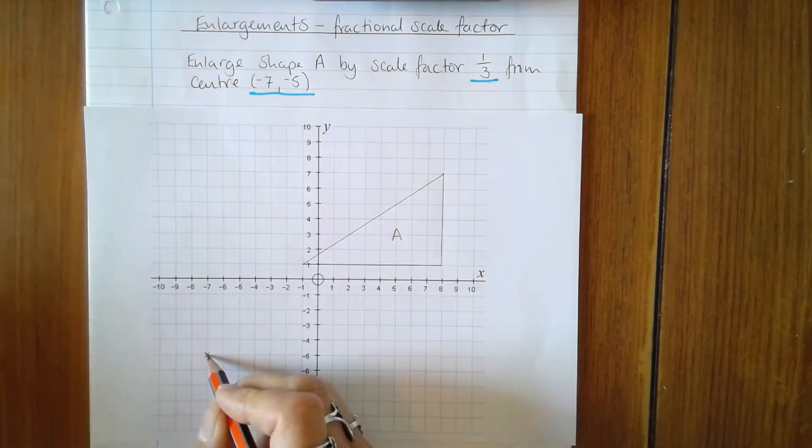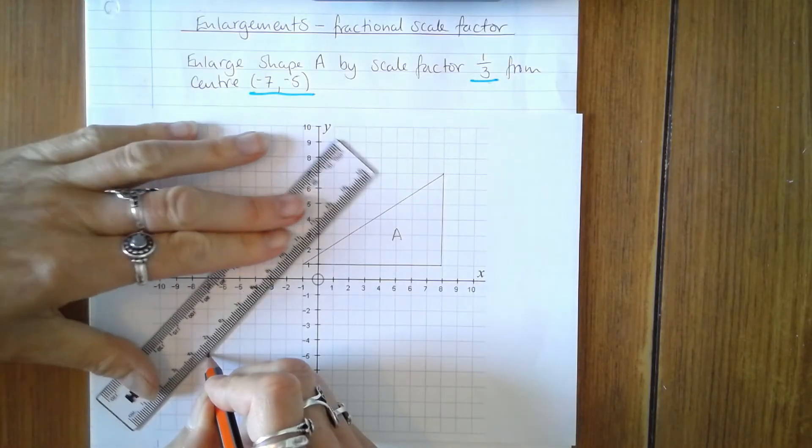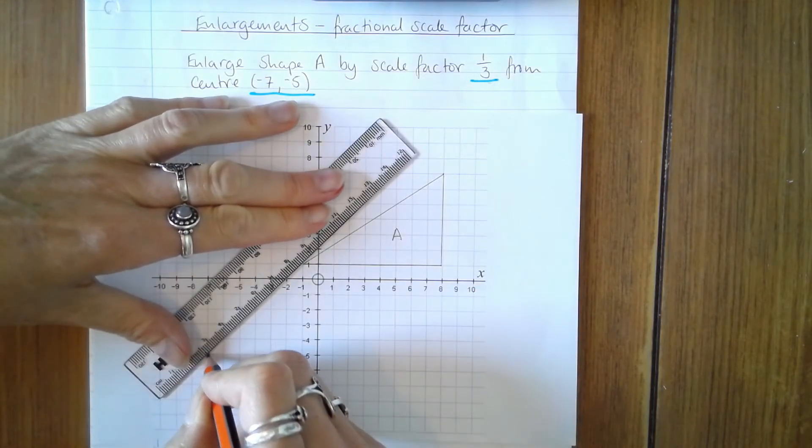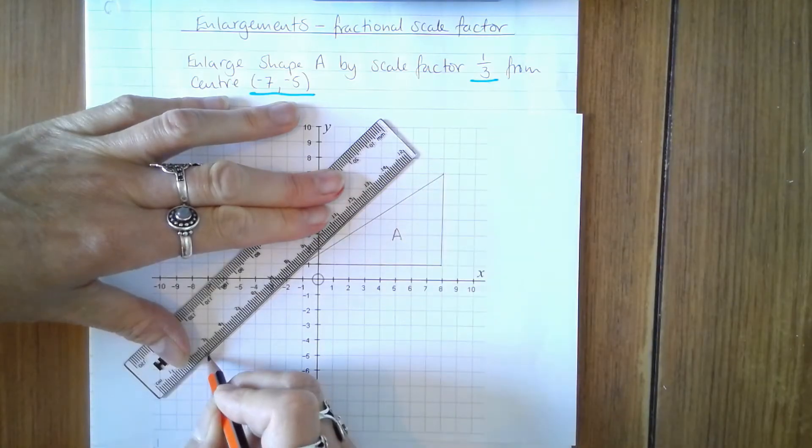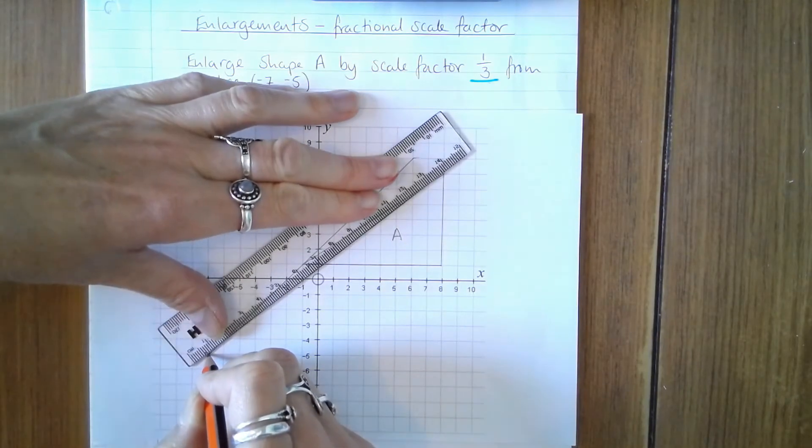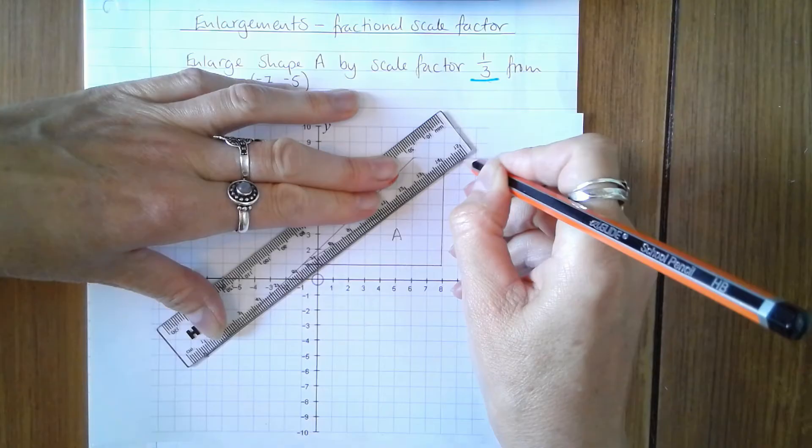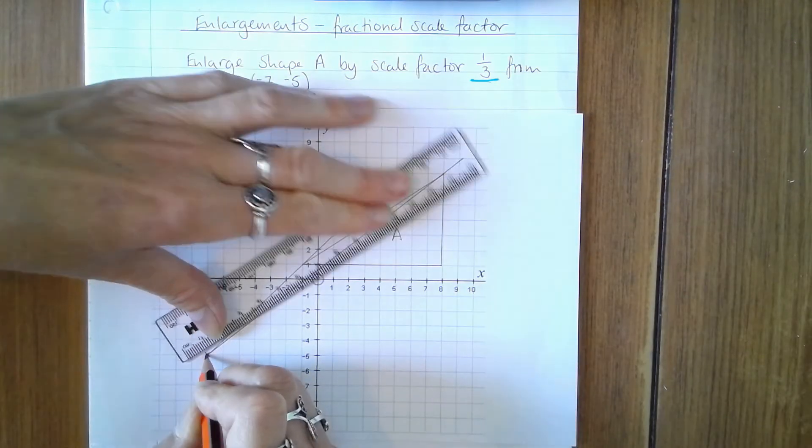And now I'm going to draw guidelines from the center through each vertex or corner of the triangle. And these will help me verify that my transformed shape is in the correct position.